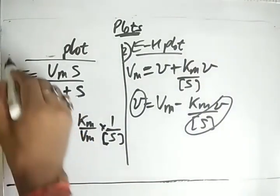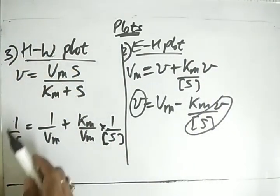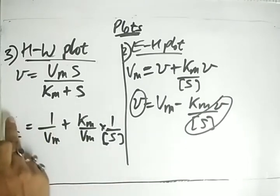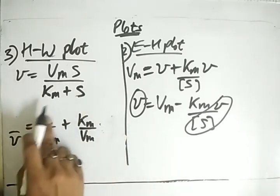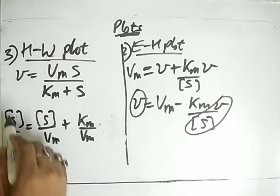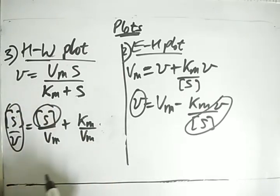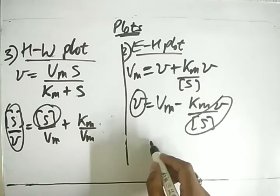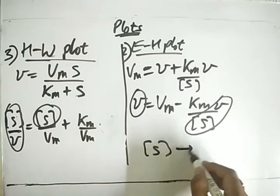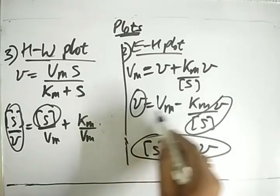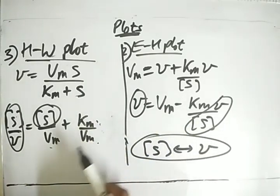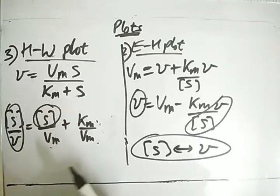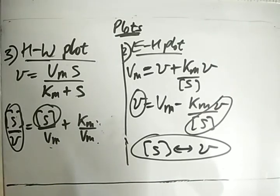The last plot is the Hanes-Woolf (HW) plot, similar to the LB plot. Here we multiply through by S to get S/V = S/Vm + Km/Vm. Plotting S/V versus S gives a straight line with slope 1/Vm and intercept Km/Vm. Remember: S and V always appear in these plots as the measured variables; Vm and Km are what we extract as slope or intercept. That concludes this video — please like, share, and subscribe, and wait for part two.